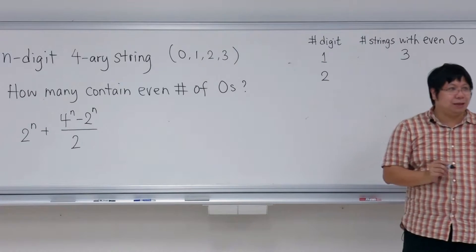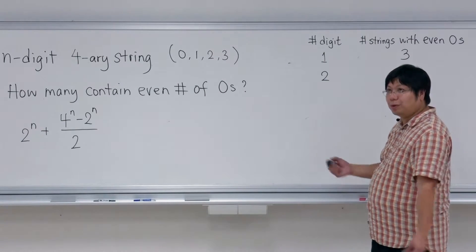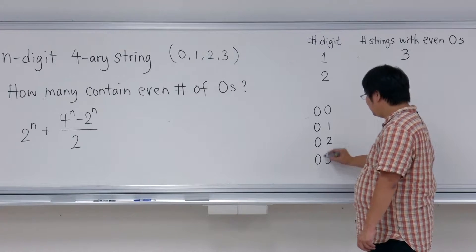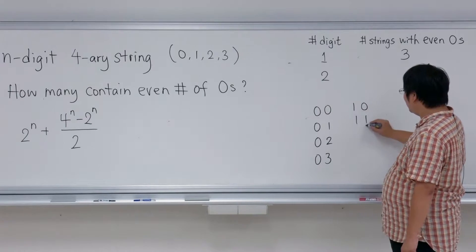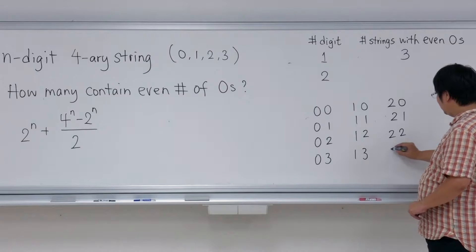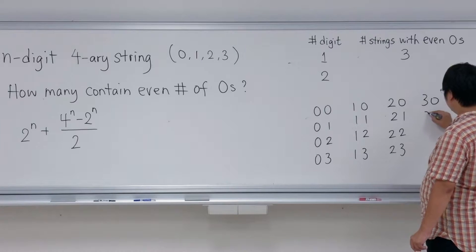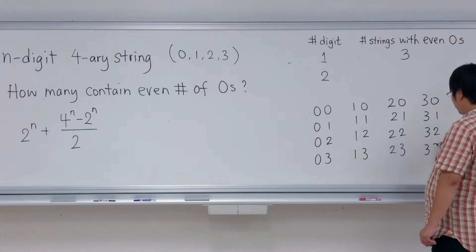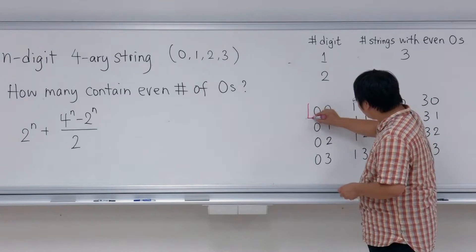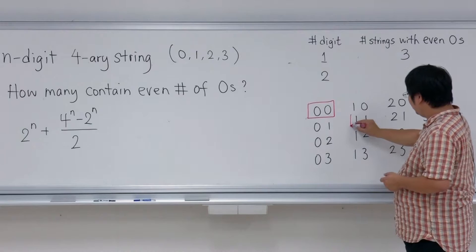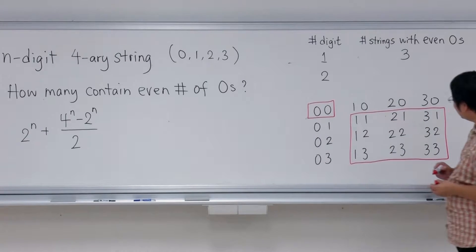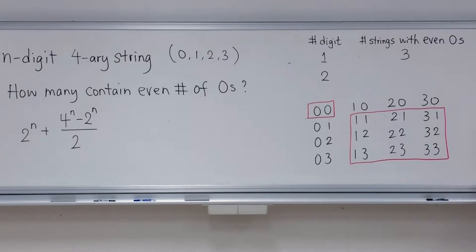For two digits, there are 16 possible cases: 00, 01, 02, 03, 10, 11, 12, 13, 20, 21, 22, 23, 30, 31, 32, 33. We mark which ones have even number of zeros — it turns out there are 10 of them.